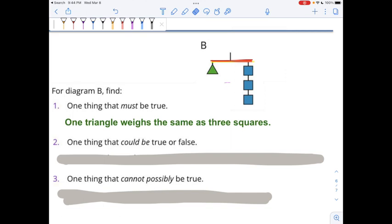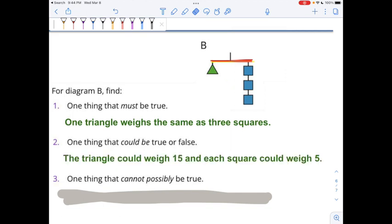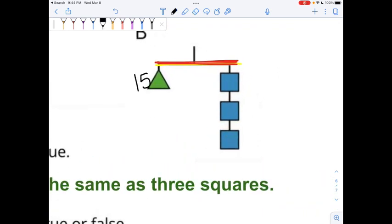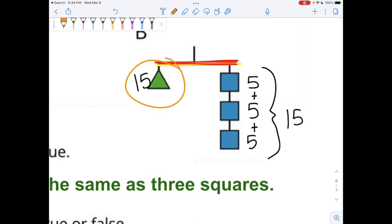For number two, one thing that could be true or false, the triangle could weigh 15, and each square could weigh 5. Let's try that out. If the triangle weighs 15, and each square over here weighs 5, then I just have to ask myself, what is 5 plus 5 plus 5? That's 15. Do you see that we have the same thing on both sides? Great. But this wouldn't have to be true. It wouldn't have to be 15. It could be some different numbers. Like, maybe the triangle weighs 3. If the triangle weighs 3, then each square could weigh 1. So, at this point, I can't say for sure what value each of those shapes has. I can say that each square weighs exactly the same, though.